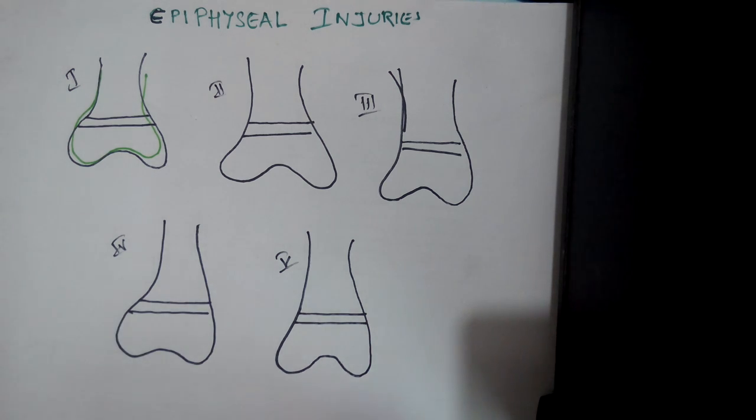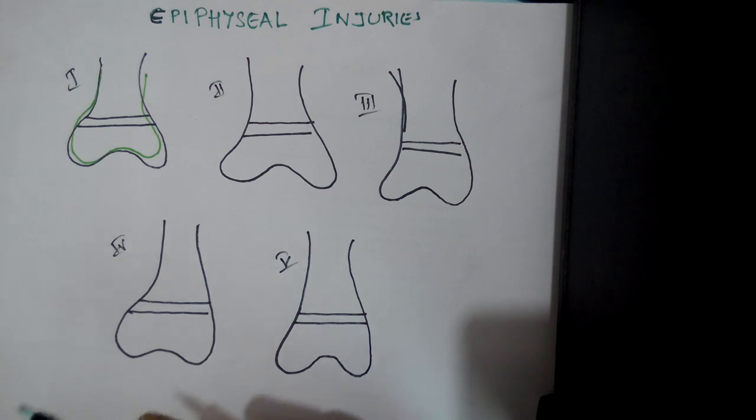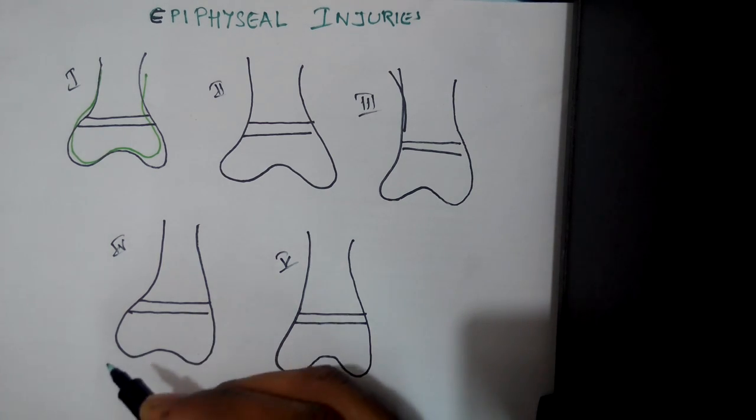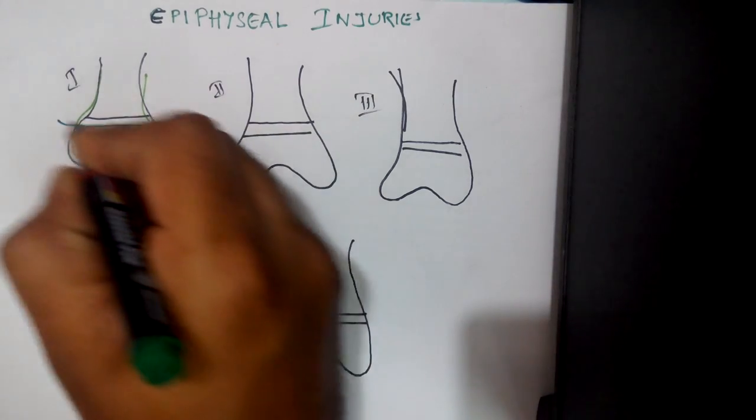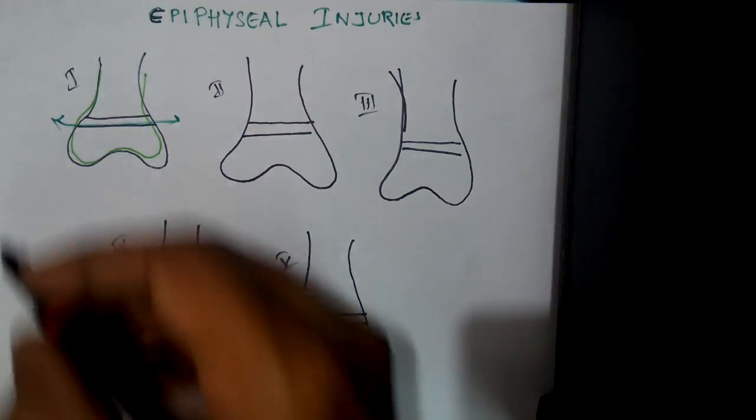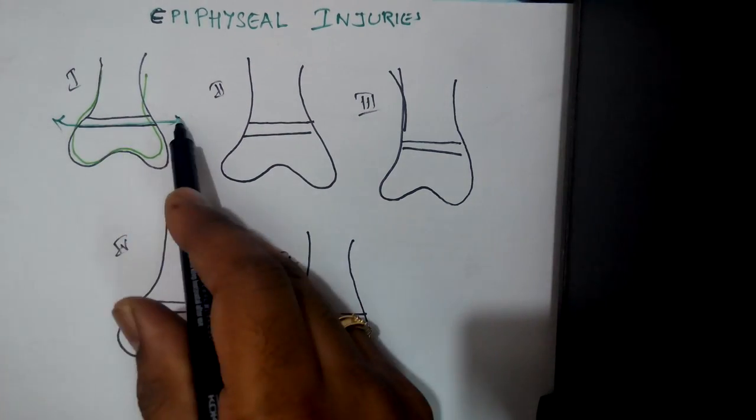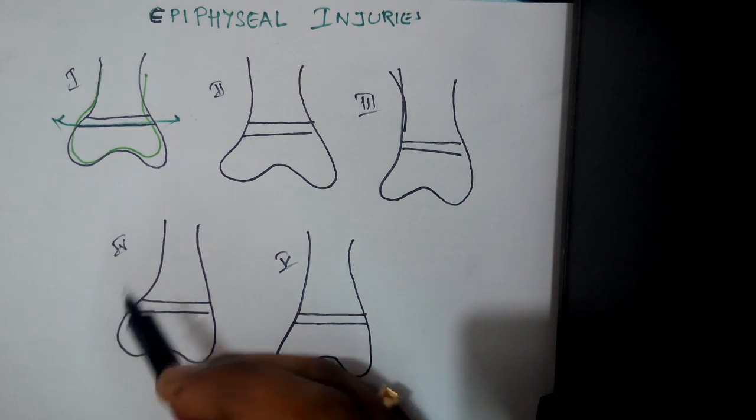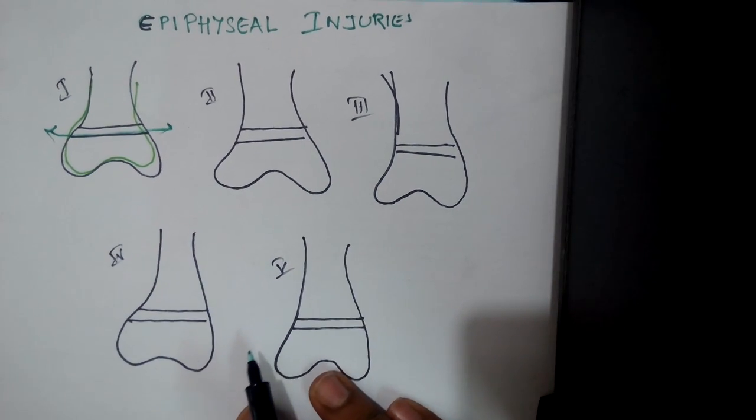In type 1, just write number 1 but write it horizontally. So this is one. The fracture line is along the physis.